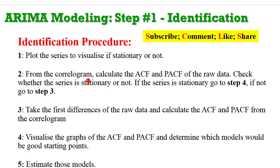Here are five simple steps to guide the identification procedure. First, plot the series to visualize whether it is stationary or not. Second, plot the correlogram and calculate the ACF and PACF of the raw data to check whether the series is stationary. If the series is stationary, go to step four; if not, go to step three.